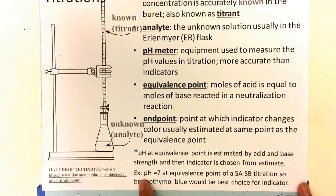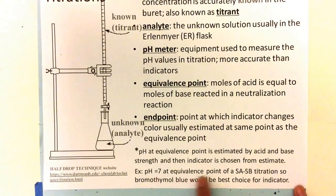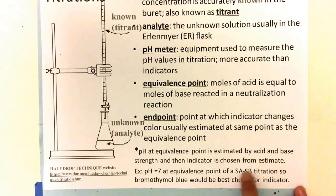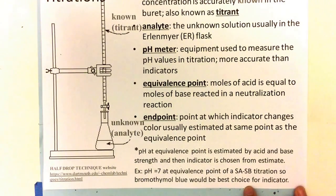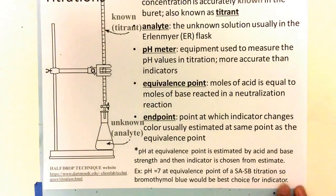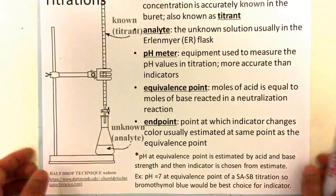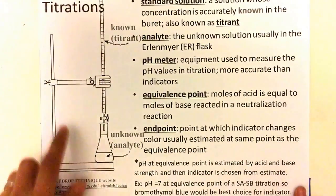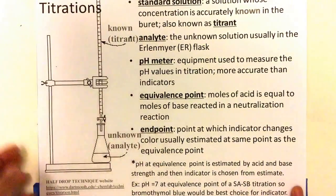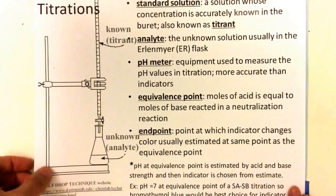Here's an example. The pH is equal to 7 at the equivalence point of a strong acid, strong base titration. So if you look at your indicators, bromothymol blue would be one of the best indicators for an equivalence point of 7 for that titration. I would hope that you've paused this and really copied these definitions down for your titration.